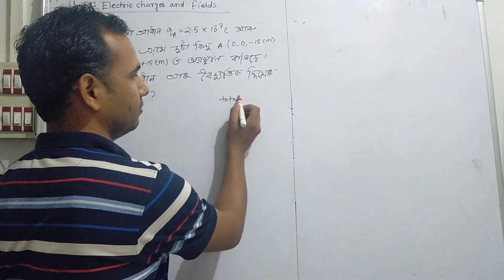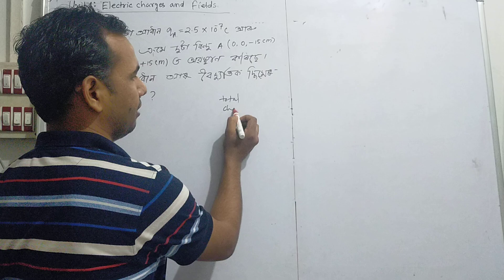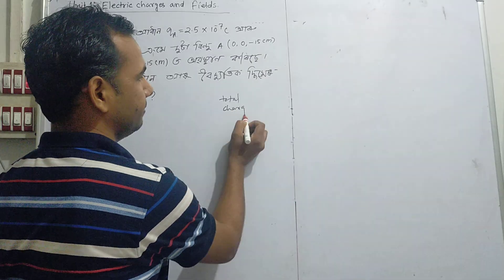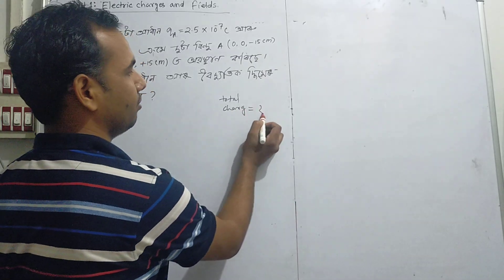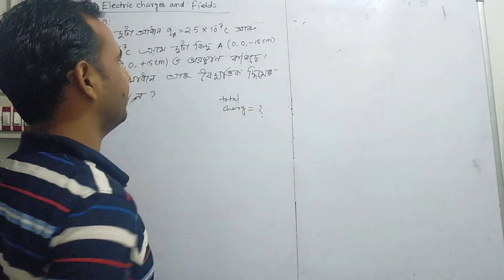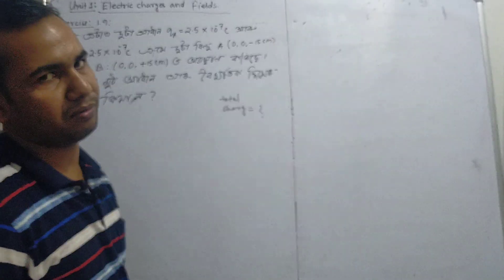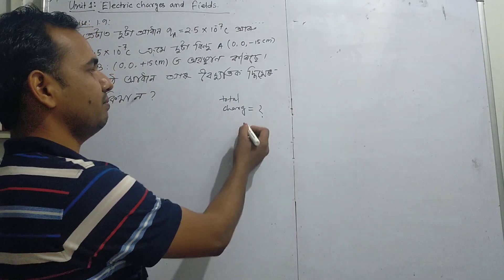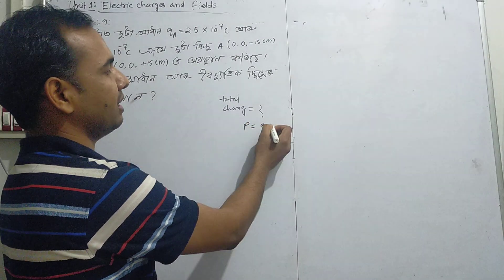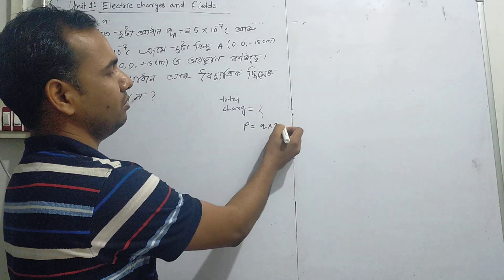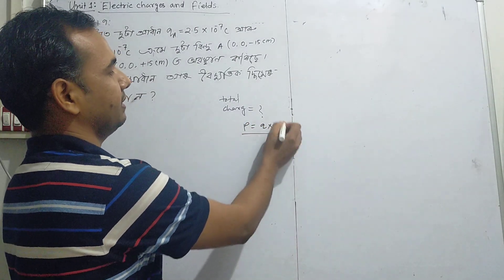The total charge: Q total. The formula is Q into y. We need to find the total charge using the dipole formula.